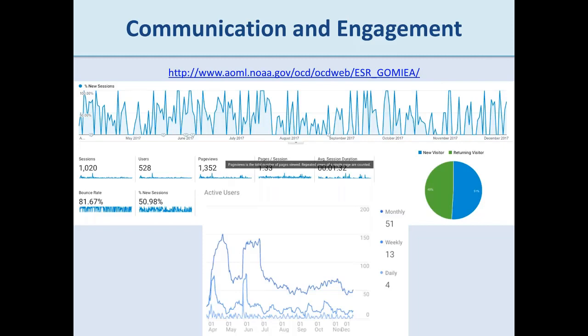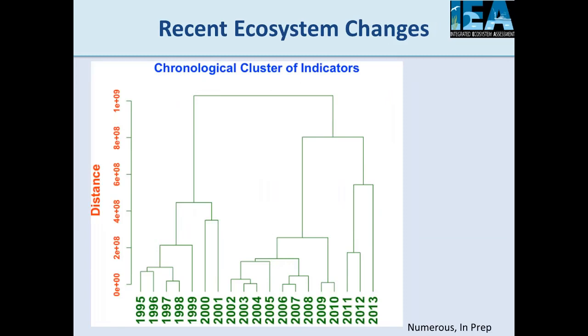Alongside the status report release, using Google Analytics on the website we tracked engagement. We received over 1,000 views and over 500 unique users. The site averages about 50 visitors per month and is staying consistent — not dropping off dramatically. The two big spikes were the initial release and a very successful outreach through the NOS Coastal Services Center.